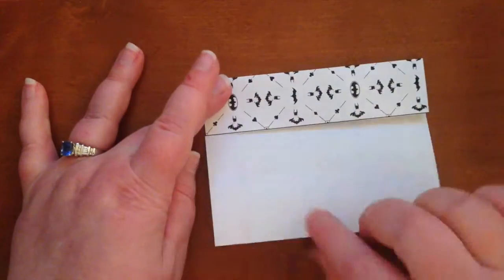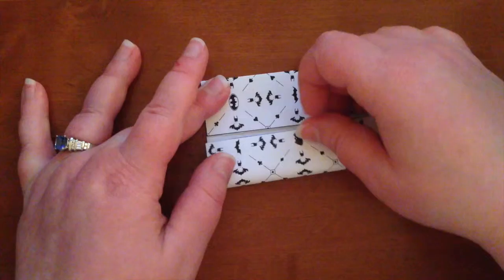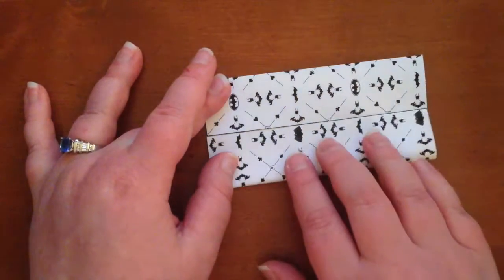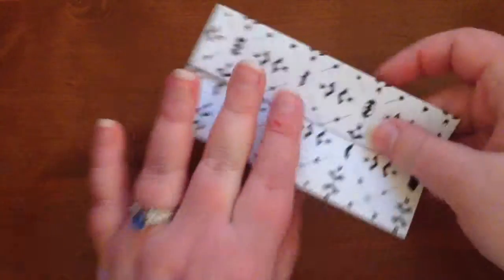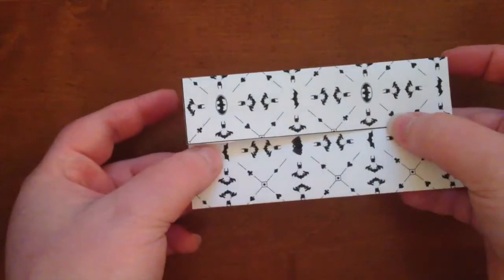Then you're going to flip it over, do the same thing with this end. Make it meet, say hello, and then nice and firm crease. Now you have it folded just like this, right?